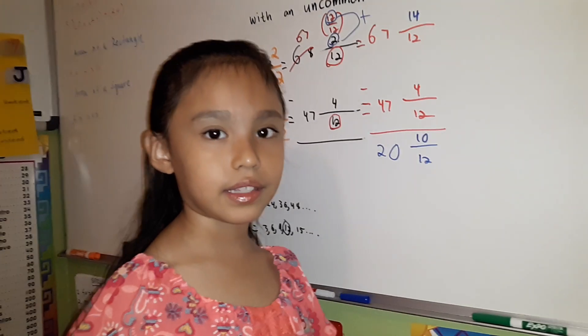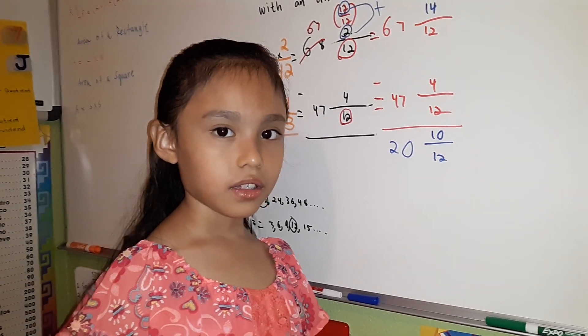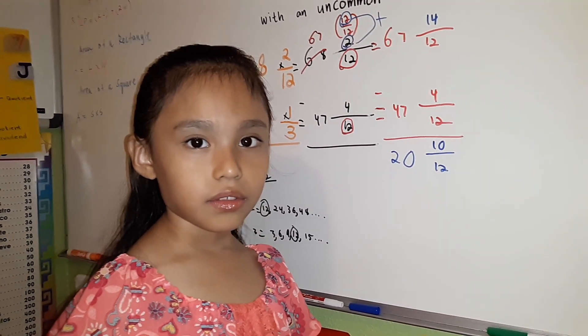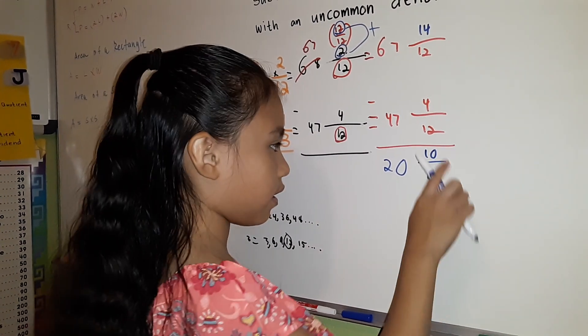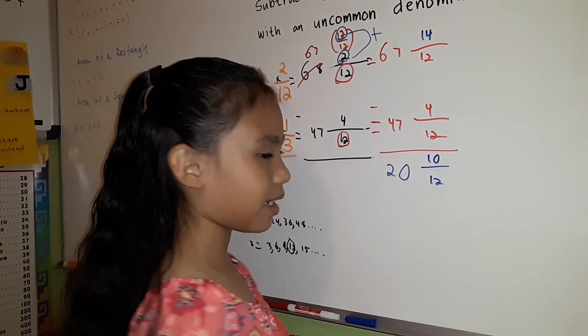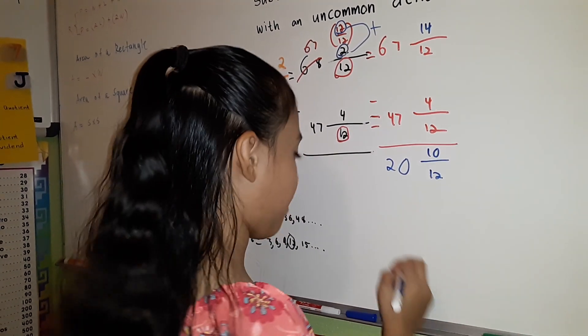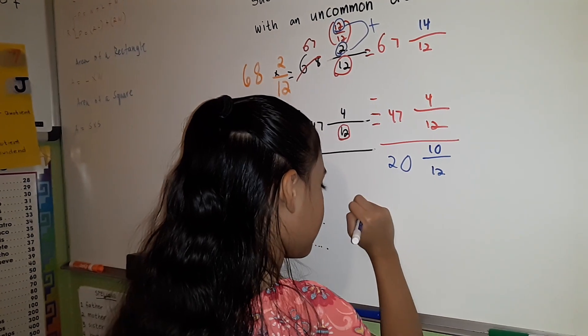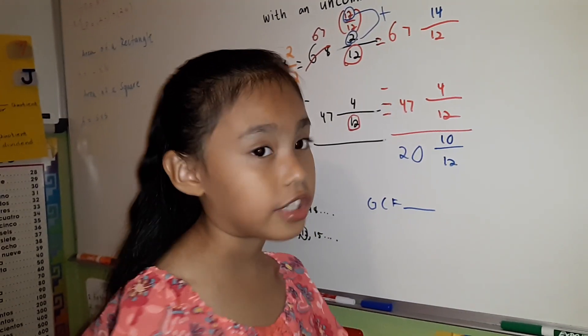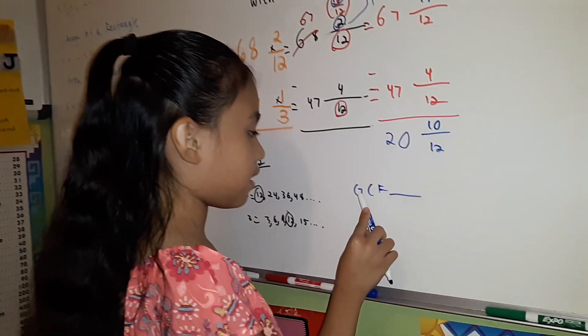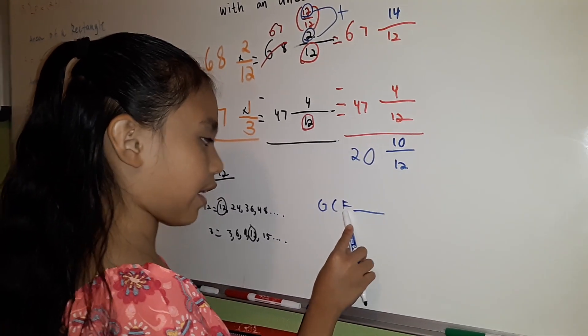10/12 is not the lowest term. So, to reduce 10/12, we're going to divide the numerator and the denominator by using the GCF. GCF. Do you know what GCF means? G means for greatest, C is for common, and F is for factor.